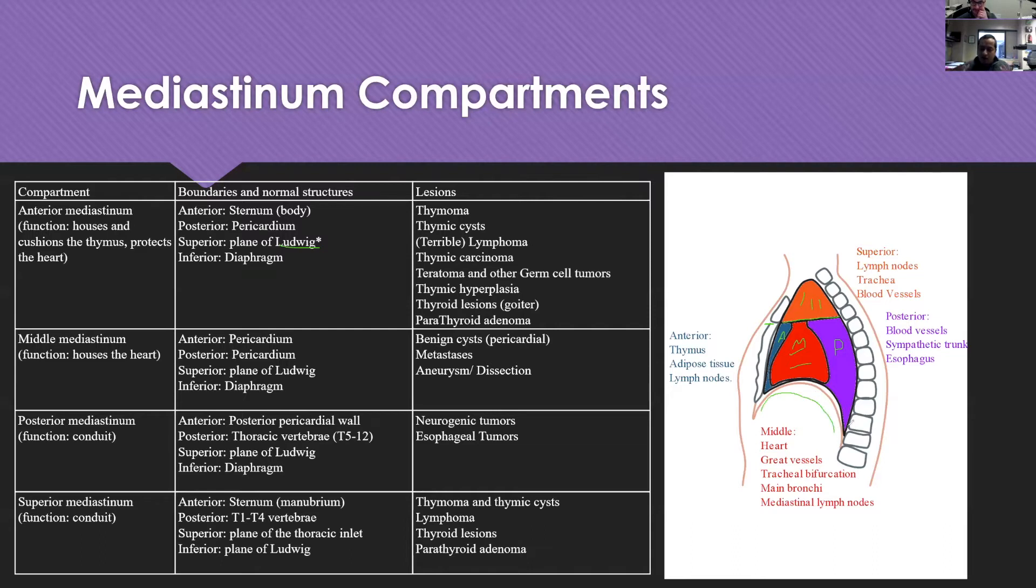Remember that the inferior border of all the inferior mediastinum is the diaphragm. When we talk of mediastinum, we're talking of all the structures that are between the two lungs. One of the really nice things that we've done in this table is shown both the boundaries and the normal structures that occur in that compartment. For example, the anterior mediastinum houses and cushions the thymus and protects the heart.